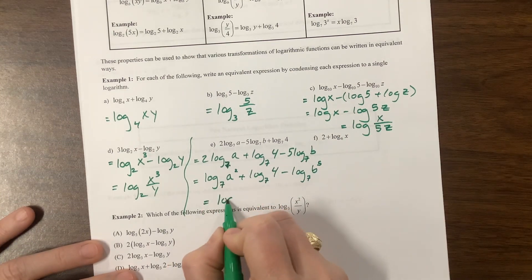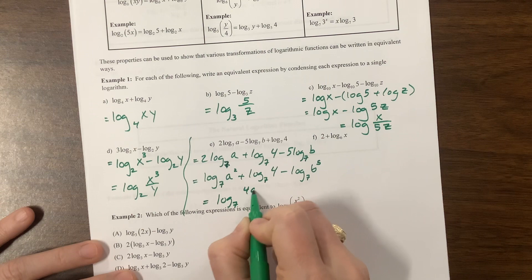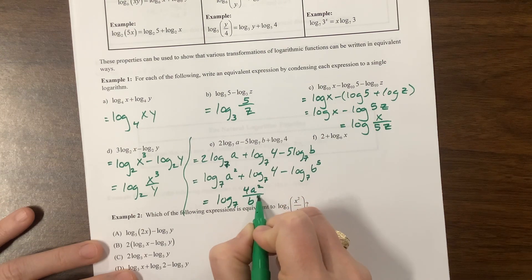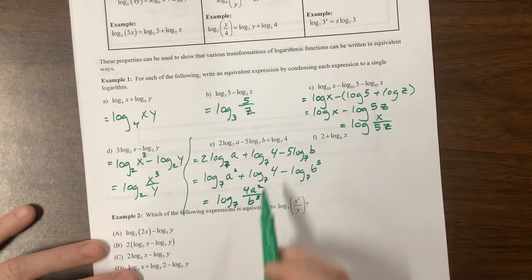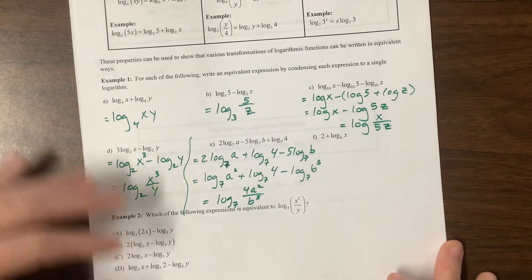And now, 4 times a squared, so then I end up with log base 7 of 4a squared over b to the 5th. I could have shown you the step where I put those together, but I didn't have enough space.